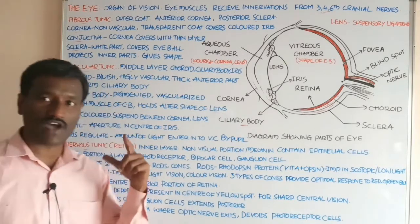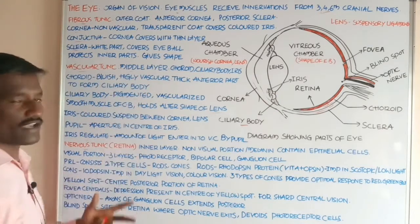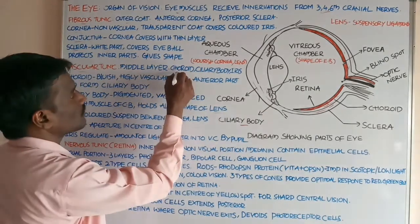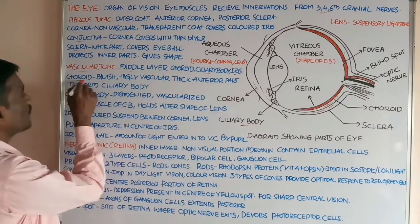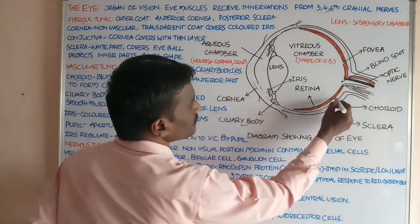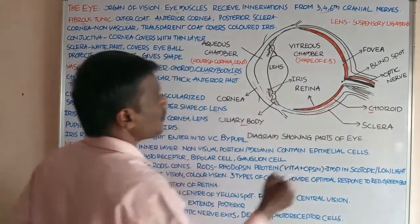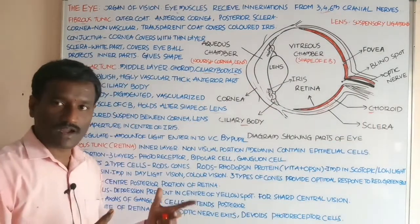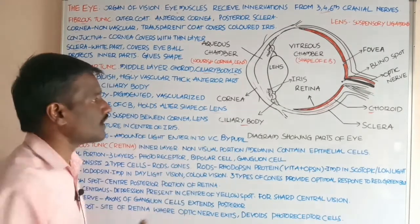The vascular tunic is the middle layer of the eyeball and is divided into the choroid, ciliary body, and iris. The choroid is bluish in color and highly vascular. The thick anterior part of the choroid forms the ciliary body.